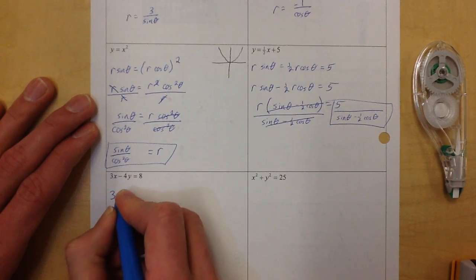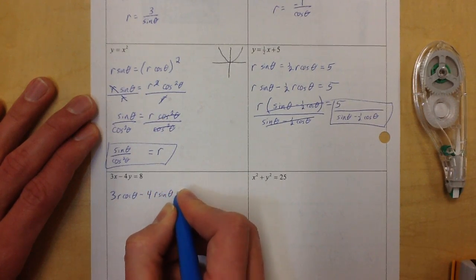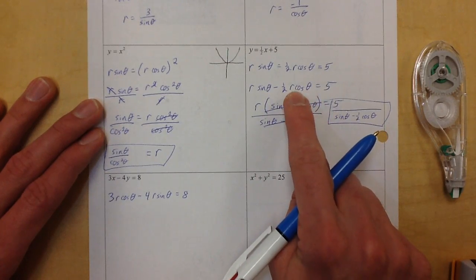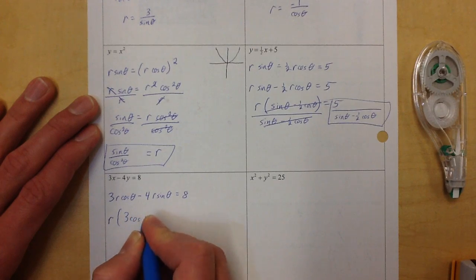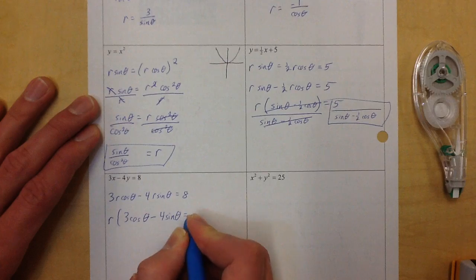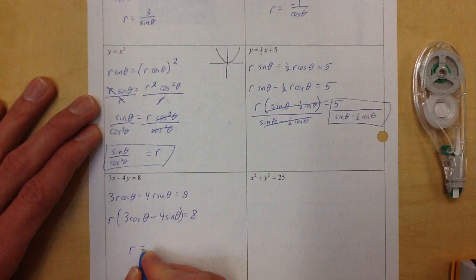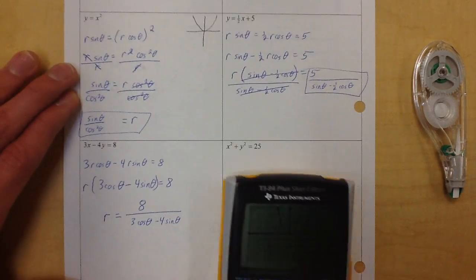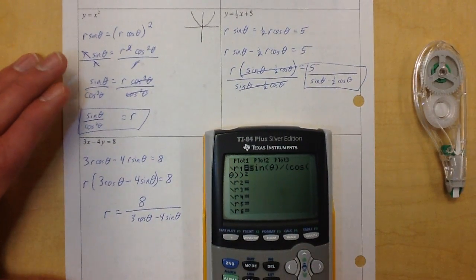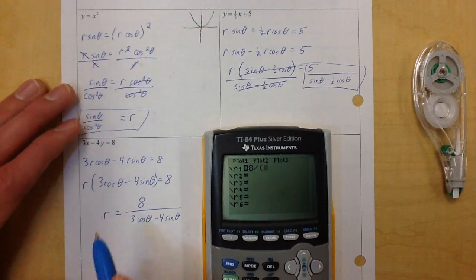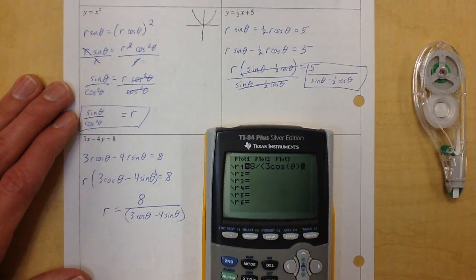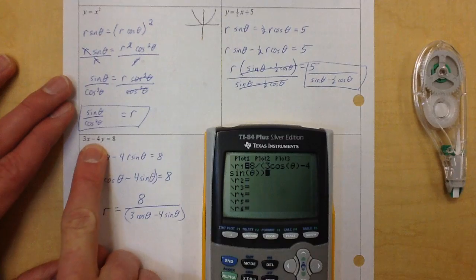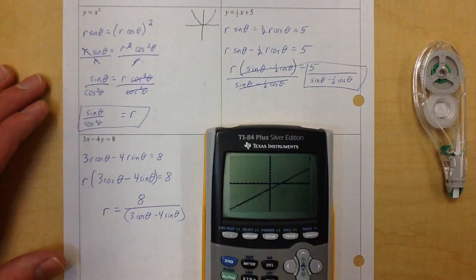Next: 3r cos θ − 4r sin θ = 8. We want r by itself, so factor out the r: r(3 cos θ − 4 sin θ) = 8. Divide: r = 8 / (3 cos θ − 4 sin θ). Type that in the calculator — 8 divided by (3 cos θ − 4 sin θ) — and we know this is a line with slope 3/4 and y-intercept −2. Sure enough, there it goes.